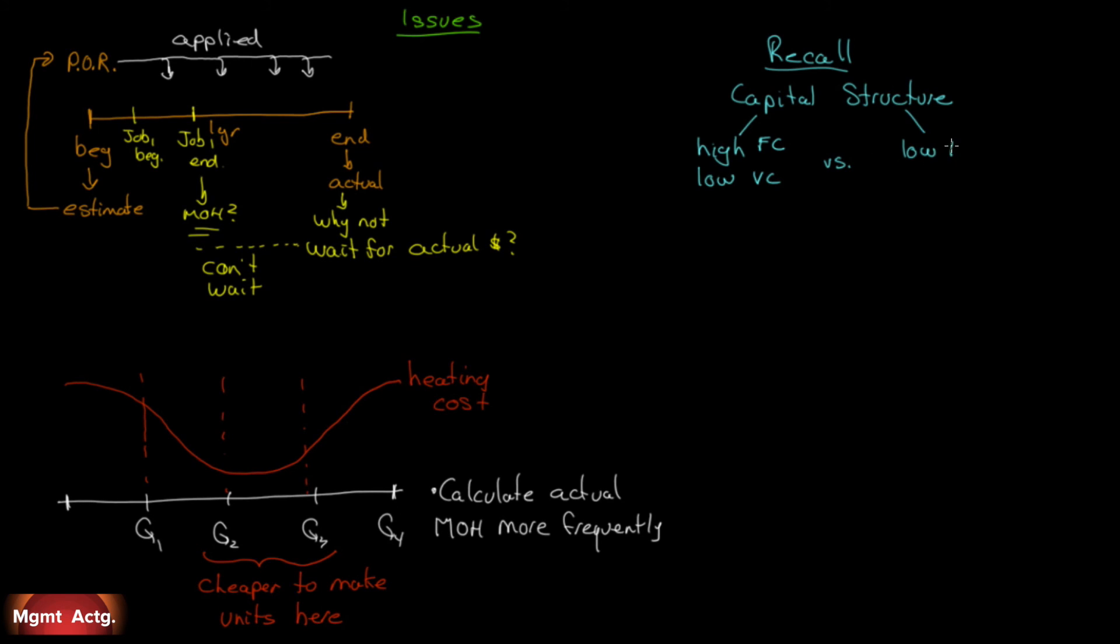Here's another issue. Let's recall our capital structure. Remember we did an example where we had high fixed costs and low variable costs versus low fixed costs and high variable costs. With high fixed costs and low variable costs, using direct labor hours or direct labor dollars may not be a good cost driver because you have high fixed costs, which means you're using more machinery to produce your output. Using labor as a cost driver may not be appropriate. If you opt for low fixed costs and high variable costs, in other words more labor than capital, machine hours may not be a good cost driver. You have to pay attention to what your cost driver is and make sure you're choosing one that's suitable for the capital structure you have.